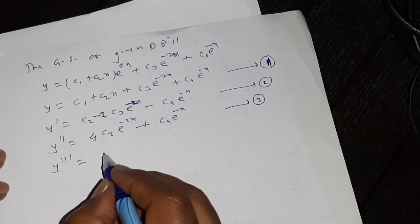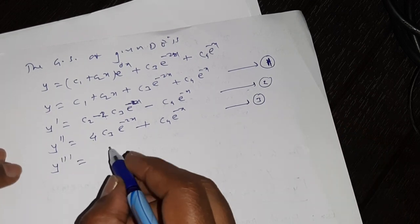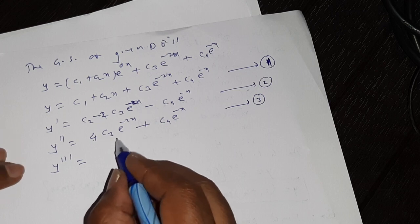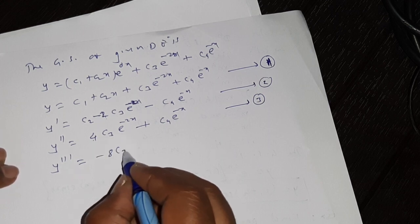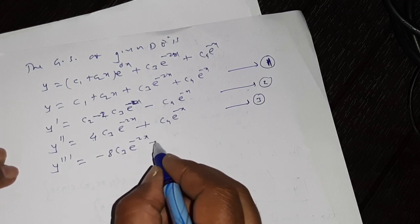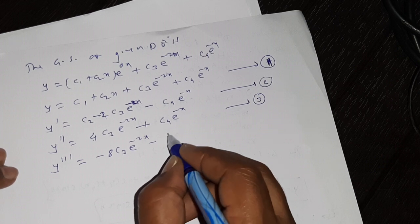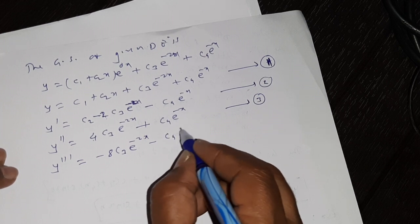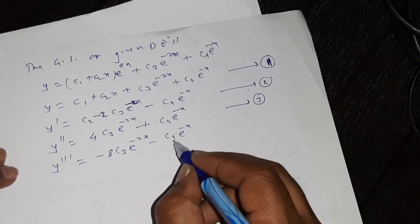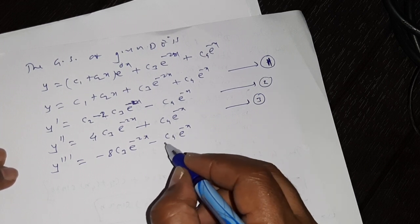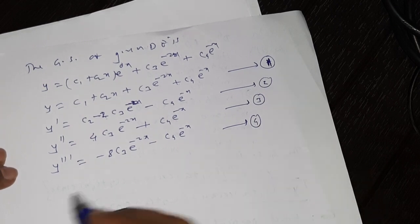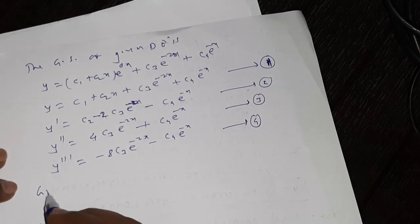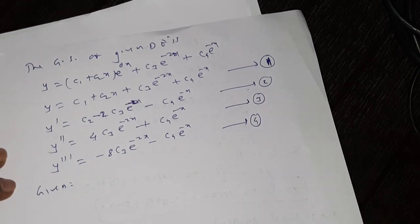Then y''' — the derivative of that term is minus 8·c3·e^(-2x), and the derivative of the next term is minus c4·e^(-x). This is equation 4.